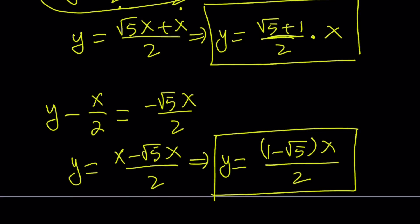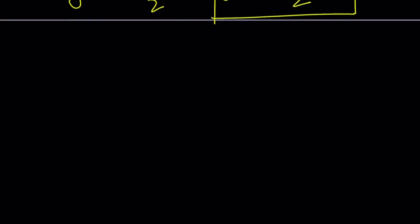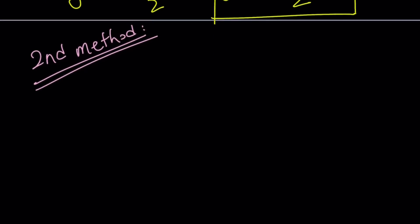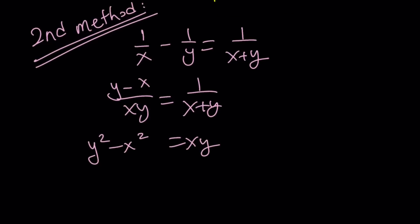At the end I'm going to show you a graph of what is going on. Alright let's go ahead and talk about the second method. And then we're going to take a look at the graph. So for my second method, let's go ahead and write the original equation one more time. So let's start here: 1 over x minus 1 over y equals 1 over x plus y. And from here you get y minus x over xy equals 1 over x plus y. Cross multiplication gives you y squared minus x squared equals xy. So this is where we are.